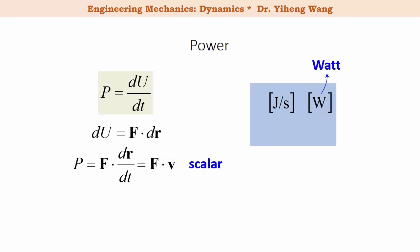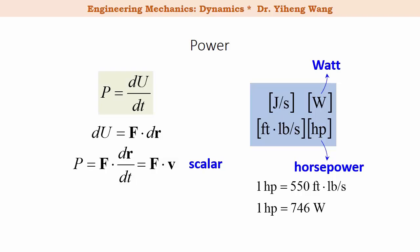In the US customary system, the unit for power is foot-pound per second, or a more common unit is horsepower. One horsepower equals 550 foot-pound per second, and one horsepower equals 746 watt.